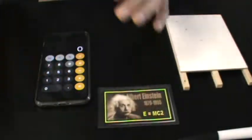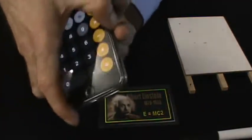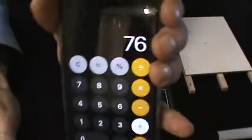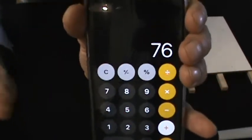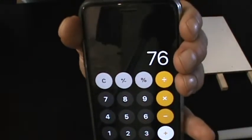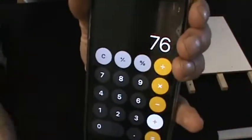And you can follow along at home. So you would take Einstein's age, 76, enter that into your calculator, hit plus. And now I want you to think of any two-digit number between 50 and 100. So whatever that number is, let's enter it into the calculator.